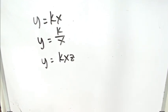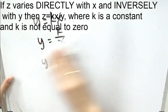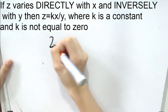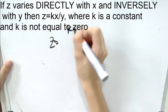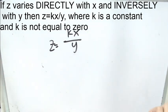Let's have this. If z varies directly with x and inversely with y, then we have z equals kx over y, where k is still a constant term, and k is not equal to zero.